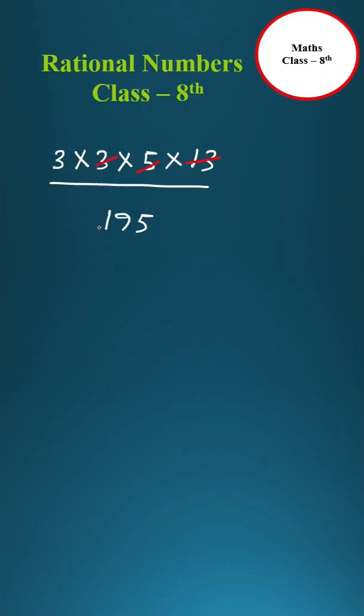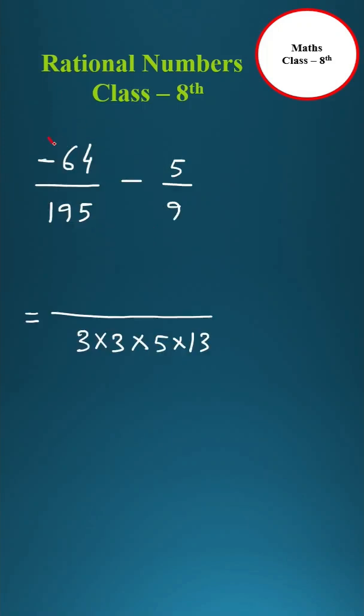3 into 5 is 15, into 13 is 195. 195 cancel, only this 3 is left. Multiply this 3 with minus 64.